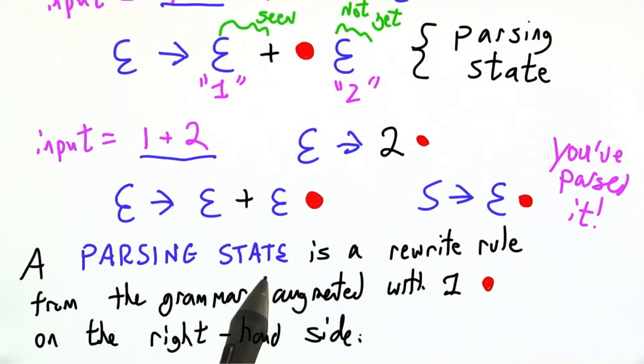So formally a parsing state, a possible configuration of a parser, a world we could be in, is a rewrite rule from the grammar, augmented with exactly one red dot, that's where I'm putting my finger, that's where we are now. The past comes before it, the future comes after it, on the right hand side of the rule. You can never put the dot on the left, the dot is always to the right.